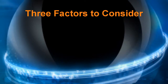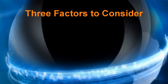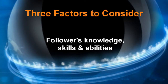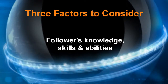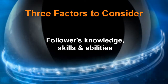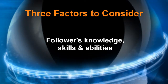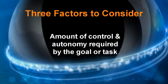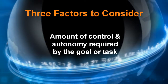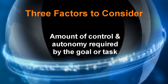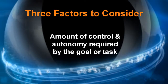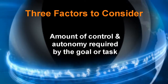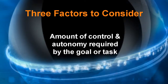There are three factors you must consider when deciding if you want to delegate or empower. One: the follower's knowledge, skills, and abilities. The more extensive the individual's capacity to make and execute a course of action without your involvement, the more you can move toward the empowerment end of the continuum. Two: the amount of control and autonomy that is required to complete the goal or task. Some tasks are very prescribed, such as completing a specific report, and in those situations you are really delegating the task, not empowering a result.